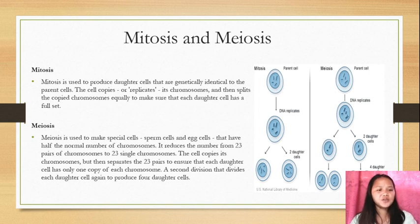Meiosis is used to make special cells, sperm cells and egg cells, that have half the normal number of chromosomes. It reduces the number from 23 pairs of chromosomes to 23 single chromosomes.